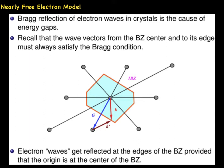Remember that the wave vectors from the Brillouin zone center and to its edge must always satisfy the Bragg condition. Electron waves get reflected at the edges of the Brillouin zone provided the origin is at the center of the Brillouin zone.